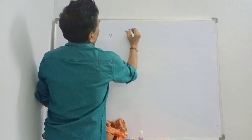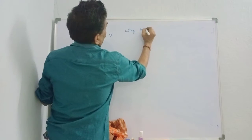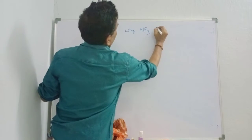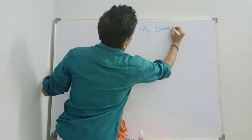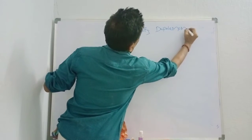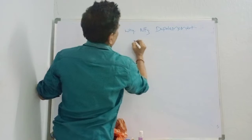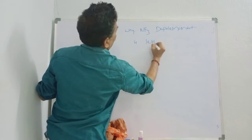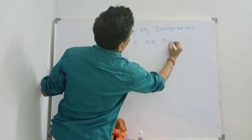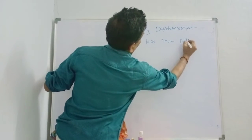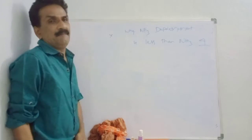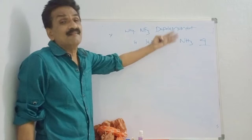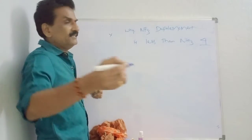This is a question from IPE AP, Telangana, and CBSE - 4 marks. Why is the NF3 dipole moment less than NH3? The dipole moment of NF3 is very poor - meaning very small. It is less than ammonia. Let's see why.